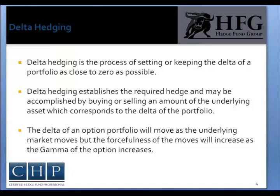Delta hedging establishes a required hedge and may be accomplished by buying or selling an amount of the underlying asset which corresponds to the Delta of a portfolio. By adjusting the amount bought or sold on new positions, the portfolio Delta can be made to sum near zero and the portfolio is then considered Delta neutral.